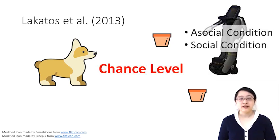Their results showed that, although the dog's performance was significantly better in the social condition than in the asocial condition, the dog's performance was at chance level in both conditions. This indicated that the dogs did not follow the pointing gestures.